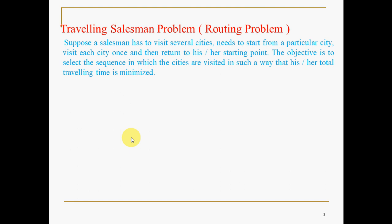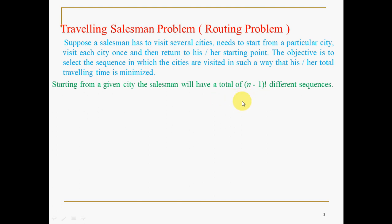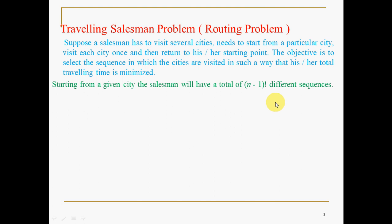If you have n number of cities, you will get n minus 1 factorial different sequences or different routes. For example, if you have 6 cities, 6 minus 1 is 5 factorial, which equals 120 different sequences or routes.